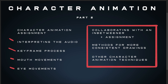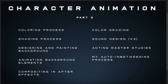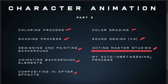Part three is post-production. I don't think anyone expects an animation course to cover color grading — literally color grading and optimizing the colors in your animation scene. We've got the coloring process — how to efficiently fill colors in a way that's fast and looks good — and the shading process, same thing. Then designing and painting the backgrounds, animating background elements so the background has movement in it, my compositing process in After Effects, and a three-part video on sound design.